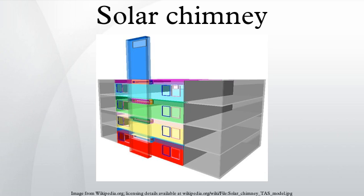In its simplest form, the solar chimney consists of a black-painted chimney. During the day solar energy heats the chimney and the air within it, creating an updraft of air in the chimney.